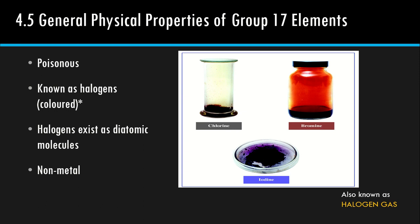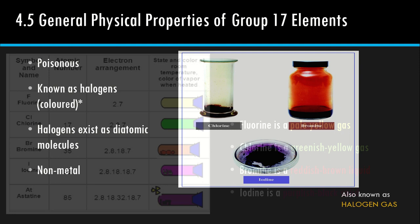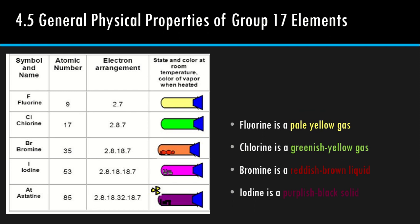This is the color of the halogen gas. Fluorine is a pale yellow gas. Chlorine is a greenish yellow gas. Bromine is a reddish brown liquid. Iodine is a purplish black solid. So iodine and bromine — iodine dah jadi solid, bromine liquid. Dua atas ni, fluorine and chlorine, usually is a gas at room temperature.